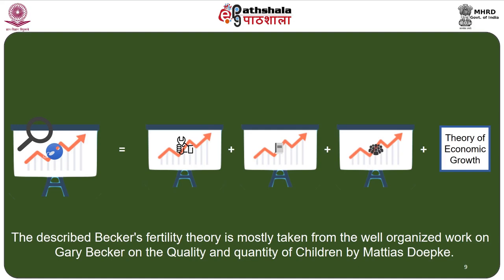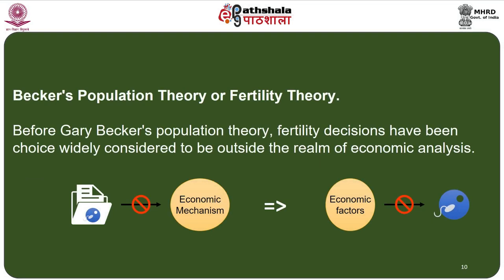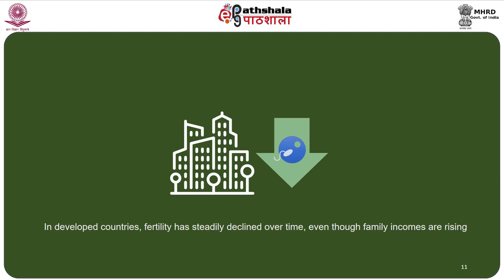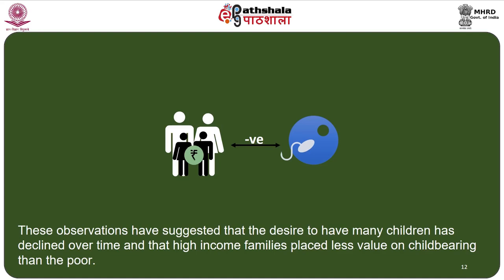Before Gary Becker's population theory, fertility decisions were widely considered to be outside the realm of economic analysis. One reason is that data on fertility have not indicated an economic mechanism — in developed countries, fertility has steadily declined over time even though family incomes are rising. The relationship between family income and fertility has been shown to be negative or sometimes very weak, suggesting that high-income families place less value on childbearing than those among the poor.